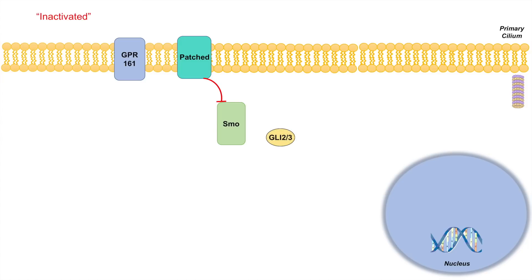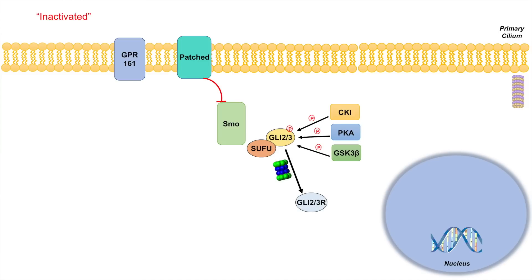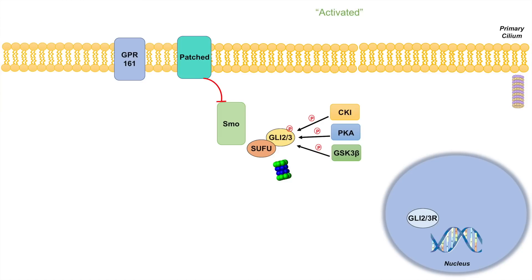When the pathway is inactivated, GLE proteins like GLE2 and GLE3 are associated with SUFU protein. Proteins CKI, protein kinase A, and glycogen synthase kinase 3-beta (GSK3-beta) all phosphorylate the GLE proteins. When phosphorylated, GLE proteins are processed by the proteasome and cleaved into truncated repressor forms — GLE2 becomes GLE2R and GLE3 becomes GLE3R. These repressor proteins translocate into the nucleus where they inhibit transcriptional activation of hedgehog-mediated genes.